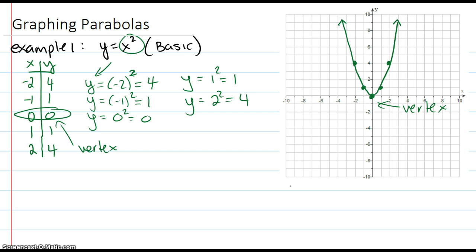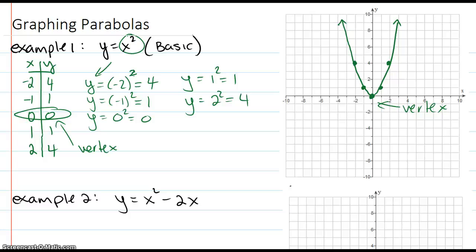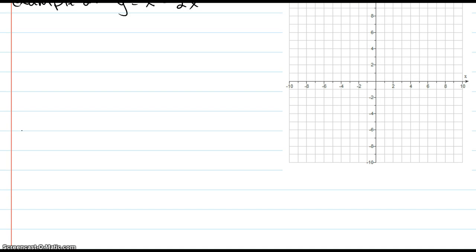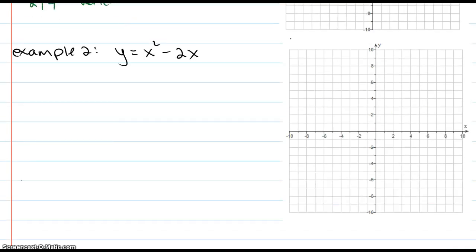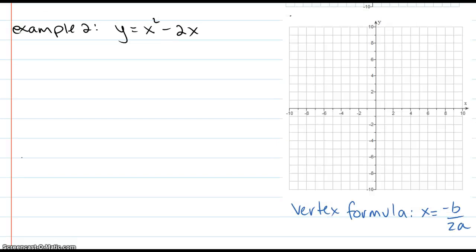There is a way, so if my parabola shifted, which is my next example, there's a way to find that vertex using the vertex formula. So let's go ahead and do that. Example 2, let's graph y equals x squared minus 2x. The vertex is not going to be 0, 0 in this case. There is a formula for the vertex. What is the vertex formula? The vertex formula is x equals negative b over 2a, where the a is the coefficient from the x squared, and the b is the coefficient from the x.